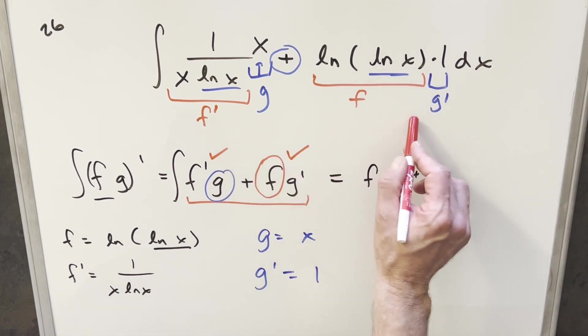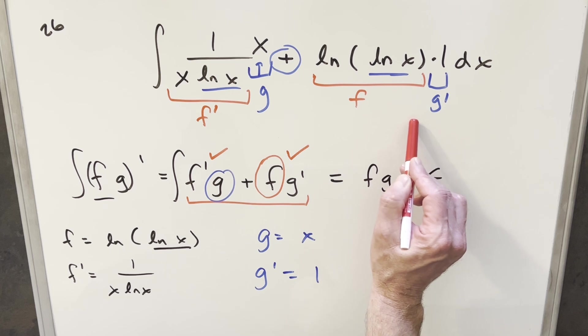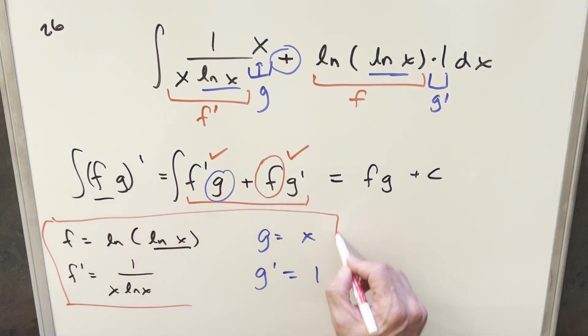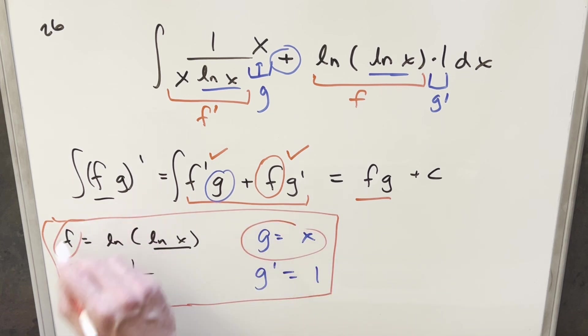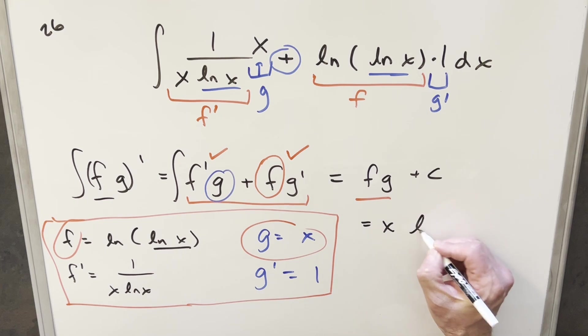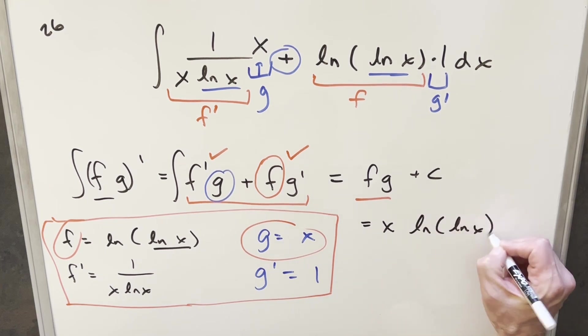Now we have our integral in exactly the right form. All this right here is just the product rule, and we have all of our values down here at the bottom. So we can go right to our solution, which is going to be just f times g. Putting this together for my final solution, we just get x times natural log, natural log x plus c, and that's it.